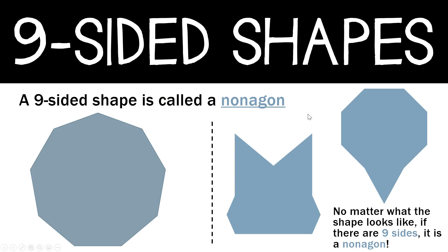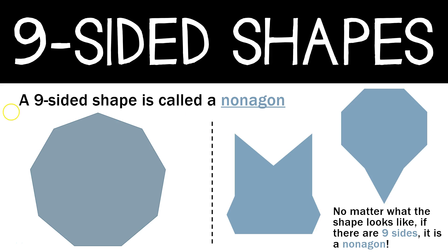Now we have a nine-sided shape. A nine-sided shape is called a nonagon. Remember, no matter what the shape looks like, if there are nine sides, it is a nonagon. All three example shapes look different, but they all have nine sides so they're all going to be a nonagon. Go ahead and pause the video and copy down this sentence: A nine-sided shape is called a nonagon. When you're done, unpause the video to move on to the next shape.